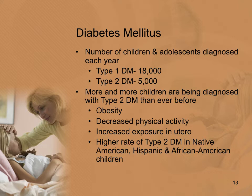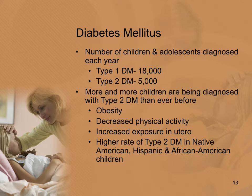Each year, 18,000 children and adolescents are diagnosed with type 1 diabetes mellitus, and 5,000 are diagnosed with type 2. We now see more type 2 diabetes in children than ever before, attributed to increased rates of obesity, decreased physical activity, increased exposure to diabetes in utero with gestational diabetic mothers, and a higher rate seen in Native American, Hispanic, and African American children.